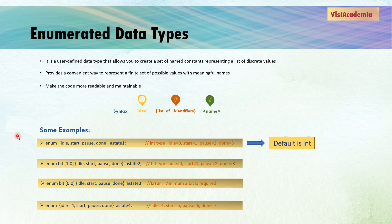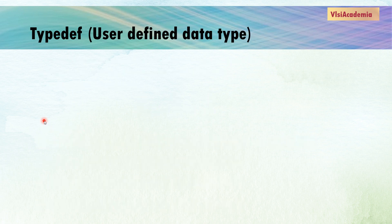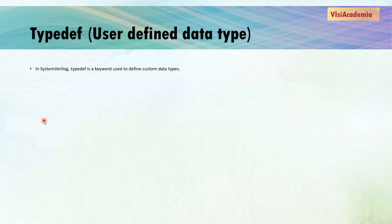Moving forward, we will discuss 'typedef', which is also a user-defined data type. The 'typedef' keyword is used to define custom data types. It allows programmers to define more descriptive and meaningful names for complex or user-defined data types, making code easier to understand and maintain. In SystemVerilog, you can use typedef to create aliases for primitive data types, enumerated types, or complex data structures like unions, arrays, or structs.